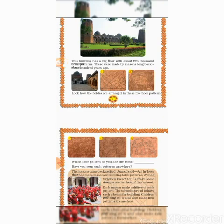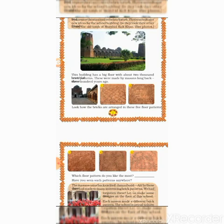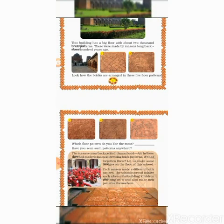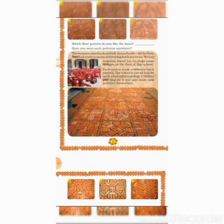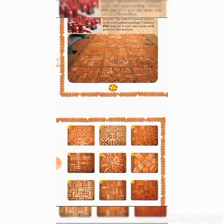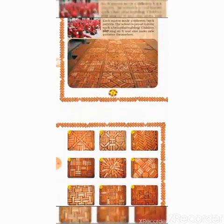Look at the pictures — there are four or five types of arrangements of floor patterns using brick. See the first pattern — the bricks are arranged in a pattern. Look at the second, third, fourth, and fifth. Which floor pattern do you like the most? Nowadays we don't see these types of patterns on a floor anymore. All houses now use tiles, marble, or different types of stones. There are many 'K' types of patterns used on floors.